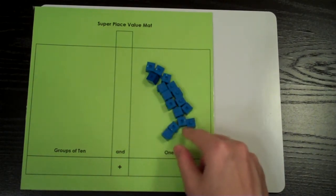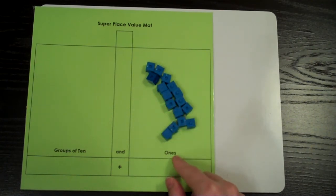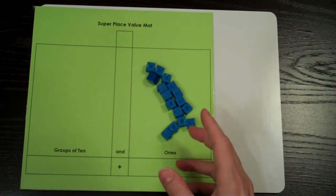But, did you remember our important rule? Each place value can only have one digit, which means on a place value mat, it can only have up to 9 manipulatives. So what next? How can we still show this number correctly?